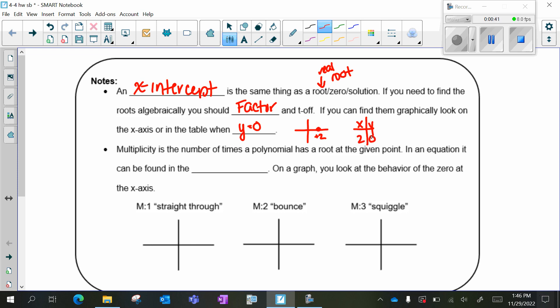Multiplicity is the number of times a polynomial has a root at a given point. In an equation it can be found in the exponent. On a graph you look at the behavior of that zero on the x-axis.